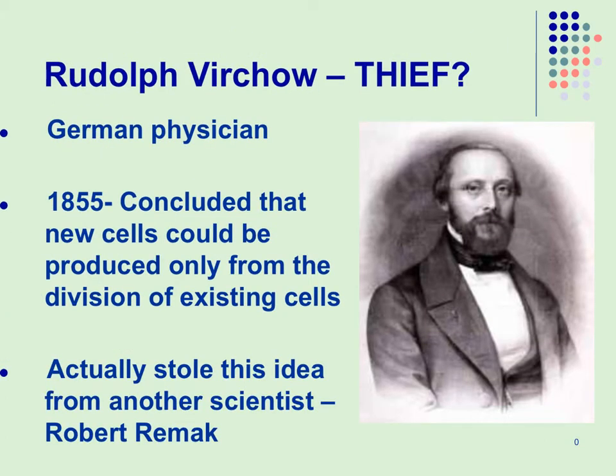The last scientist we're going to talk about is Rudolf Virchow. A lot of people call him a thief because they believe he stole the idea from another scientist, Robert Remak. Some say he didn't steal it — it was just a matter of timing of his publication — but we're going to say he came up with the idea that all cells come from pre-existing cells. It is the work of these three scientists — Schleiden, Schwann, and Virchow — that gave us what is known as the cell theory.